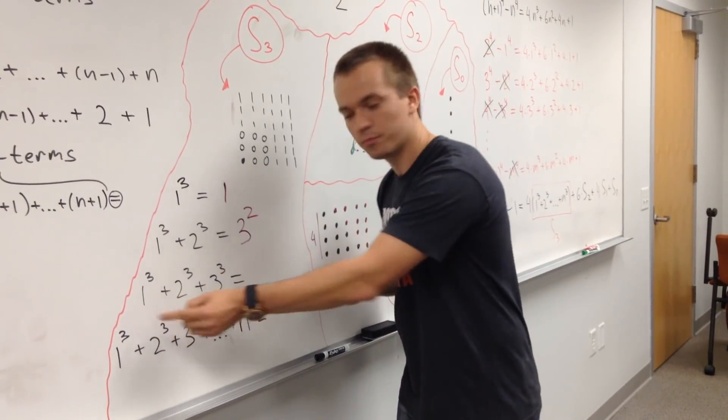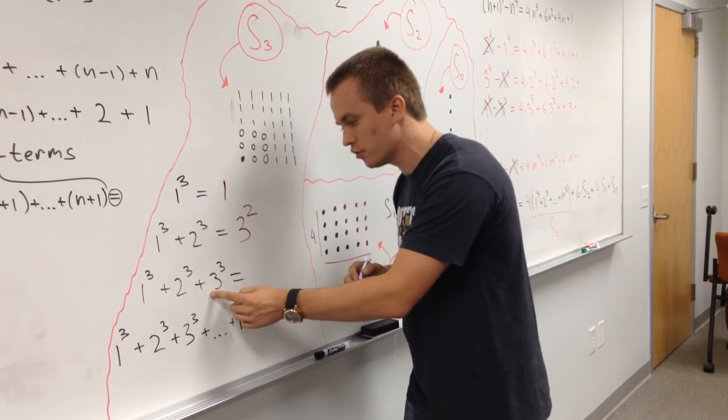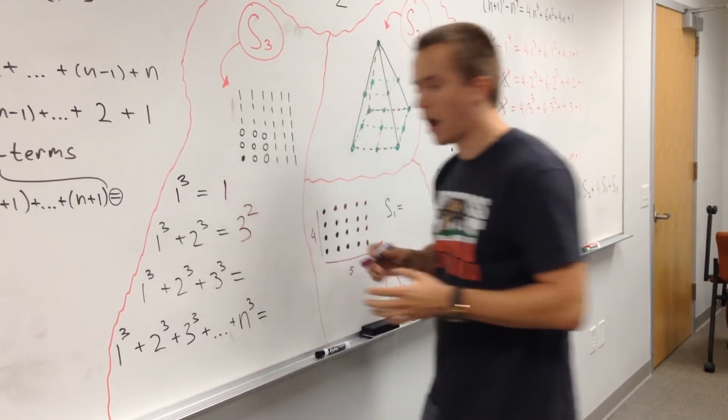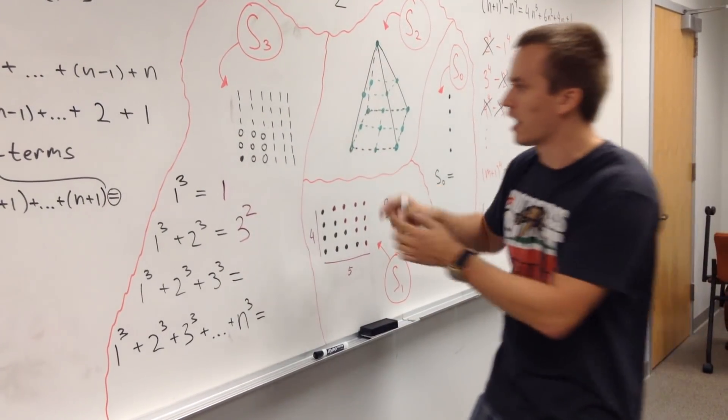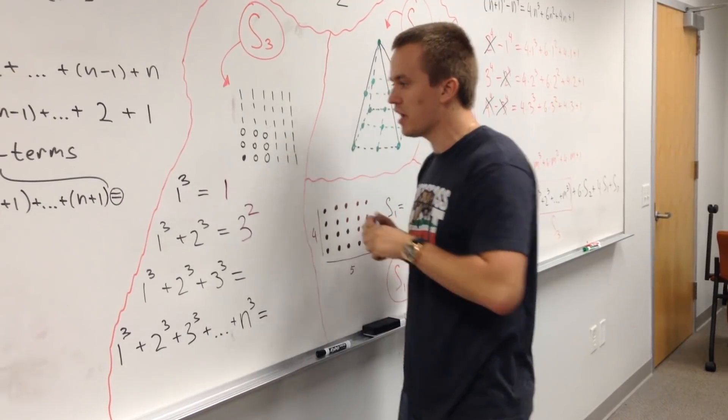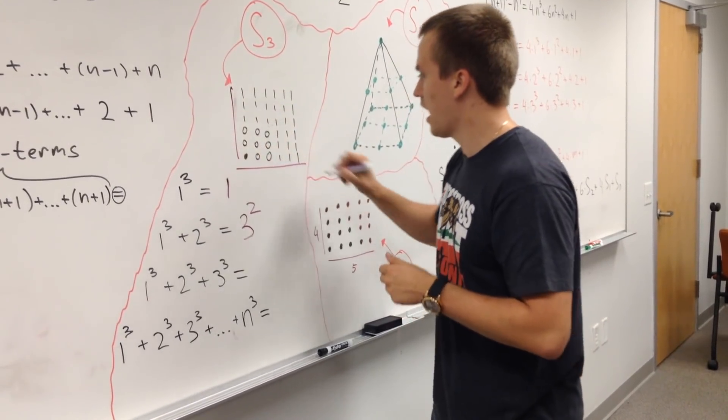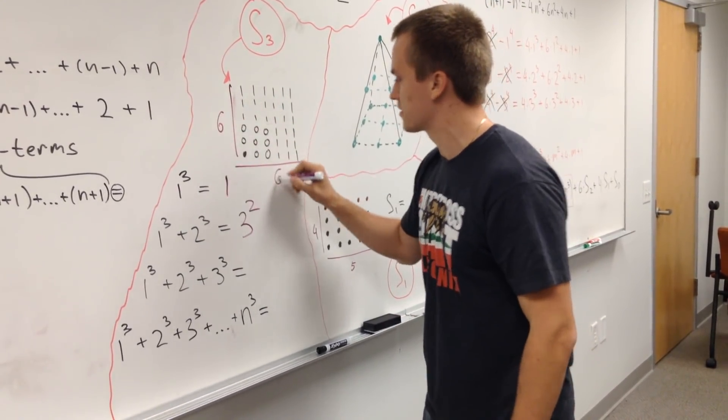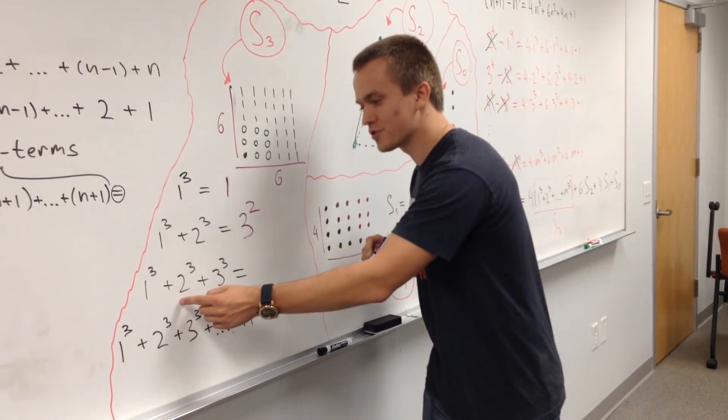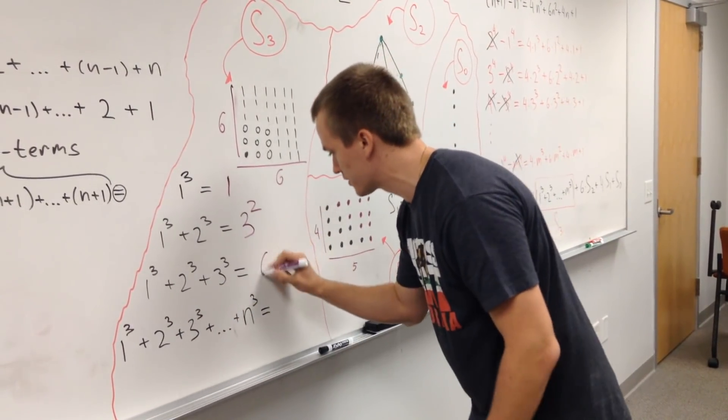If I will take one cube plus two cube plus three cube, three cube is twenty-seven. I will take twenty-seven like short lines, and organize in this way. And you can see, I have square six by six. So one cube plus two cube plus three cube is equal to six square.